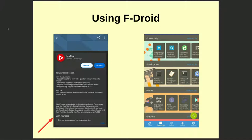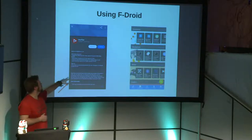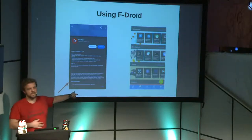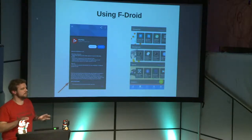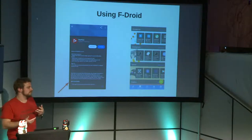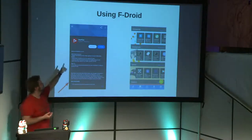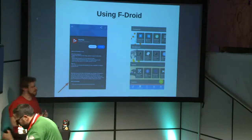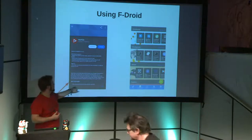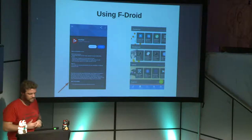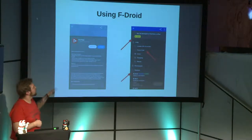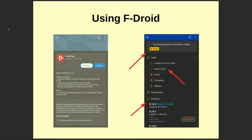If you dig deeper and choose an app, you get a detail view: a description, the latest changelog, and also anti-features warnings — so you're warned about what the app does. For example, if it tracks your GPS activity, or in the case of NewPipe — a free software replacement for YouTube — it will say this app promotes non-free network services. Scrolling further you see a donate option, meta information, the license, and a link to the source code.